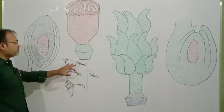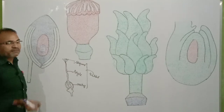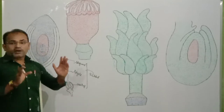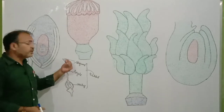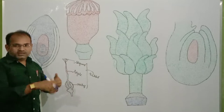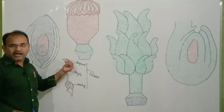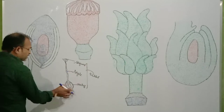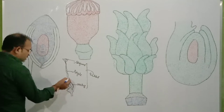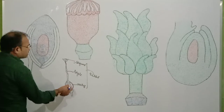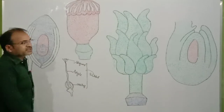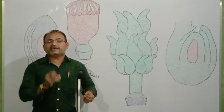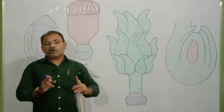Let us discuss each part one by one. The stigma is a type of landing platform — it is a sticky part. During pollination, pollen grains transfer from the anther and land directly on the stigma. Below it is a hollow, slender, long tube called the style, which is associated with the ovary below it. Inside the ovary there are small, round ovules — one or more in number — all associated with it.